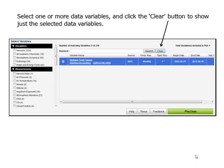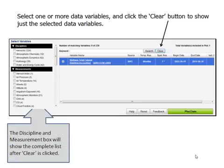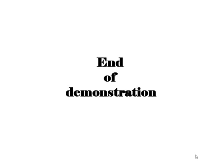Select one or more data variables and click the Clear button to show just the selected data variables. When this is done, the discipline and measurement box will show the complete list after Clear is clicked. This concludes the demonstration.